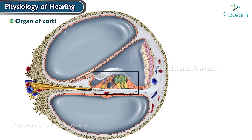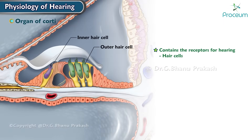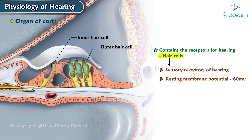The Organ of Corti contains the receptors for hearing: hair cells. Hair cells are the sensory receptors of hearing. The resting membrane potential of the hair cells is about 60 millivolts. Hair cells have a motor protein, namely prestin.